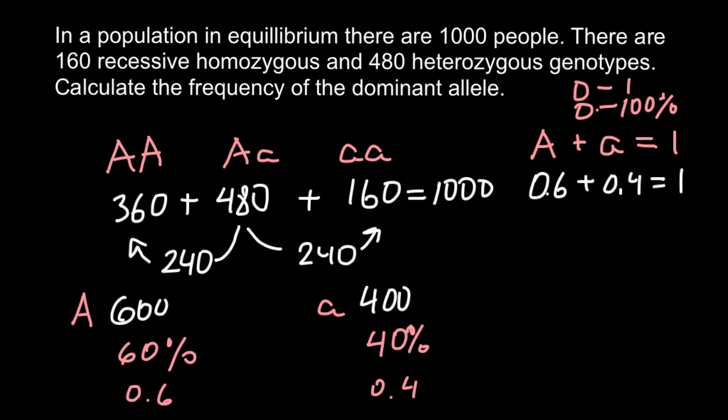The other way to solve this problem would be to use instead of number of people, we can find number of alleles. For example, 360 people would have 2 dominant alleles, so total would be 720. We have to double this number also. So 480 people would have 480 dominant alleles and 480 recessive alleles. And 160 people has 320 alleles, all recessive.